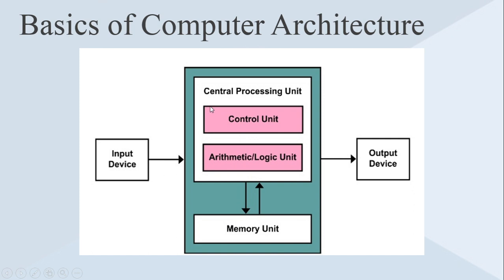From this diagram it is clear that the input devices are always providing input data to the system, and similarly the processing unit always passes the data to the output device. From the memory unit, the processing unit can fetch data or instruction sets, and after processing, the resultant value is sometimes passed to the output device or placed back into the memory unit.